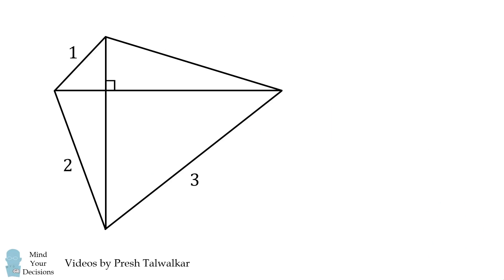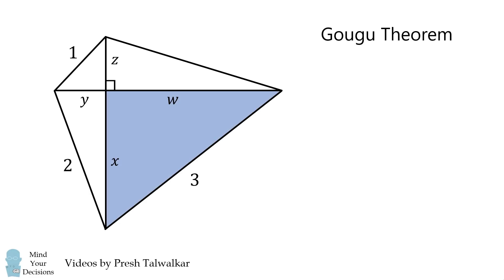Let's label some of the lengths in this diagram. We have w, x, y, and z. Consider this right triangle. By the Pythagorean theorem, we have w squared plus x squared is equal to 3 squared.